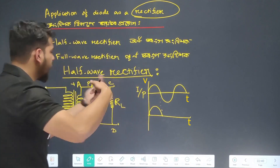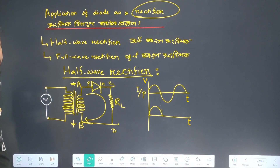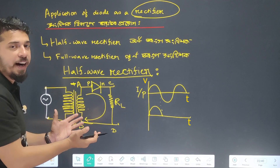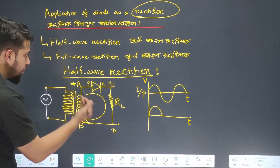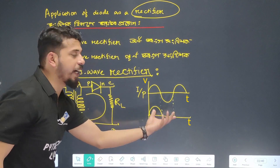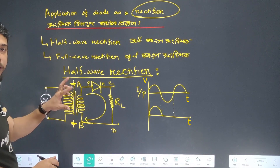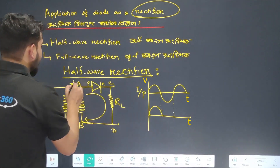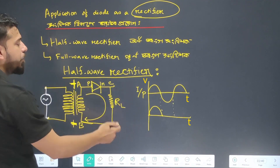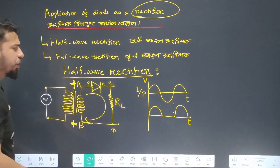Now for the second half cycle of AC, A becomes negative with respect to B — B is positive and A is negative. So the P-side of the diode is connected to negative and the N-side to positive, which means the diode is in reverse bias. No current flows, so this half cycle is absent in the output.